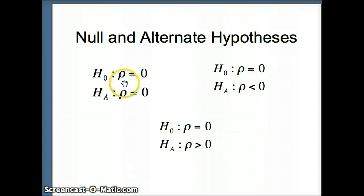Recall that rho is a parameter. That is the correlation we would get if we had the entire population of pairs of data. So we have H0 rho equals 0 versus rho does not equal 0.